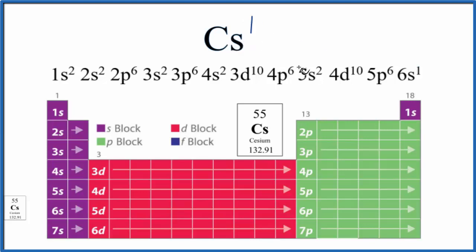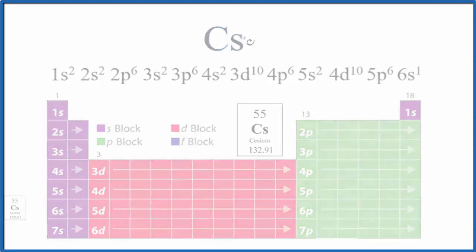If we wanted to have Cs, we just put that electron back. There we have 55 electrons. This is Dr. B with the electron configuration for Cs and Cs+. Thanks for watching.